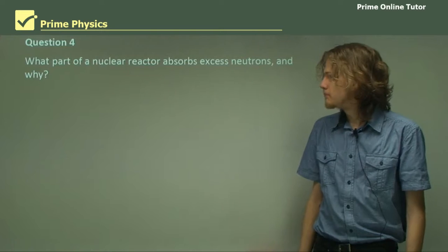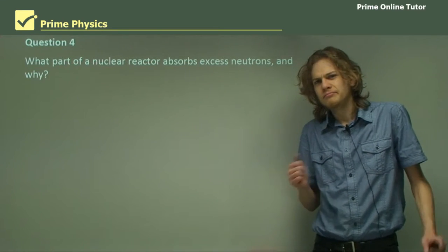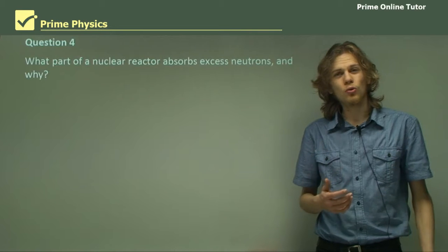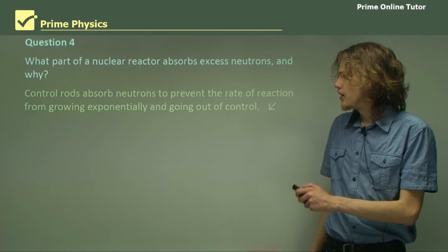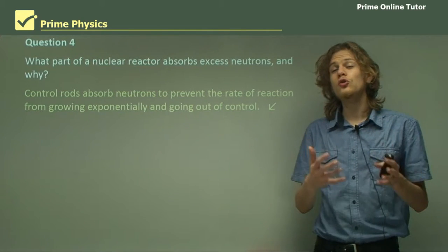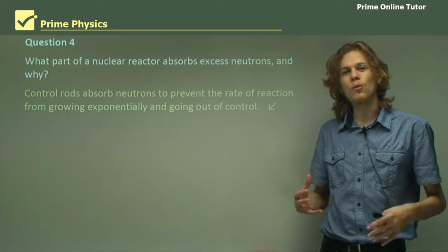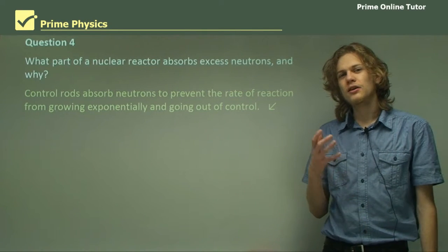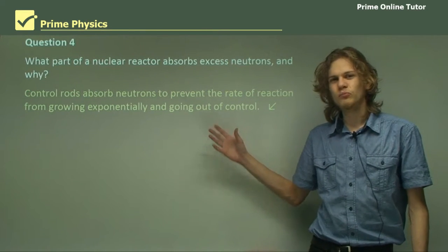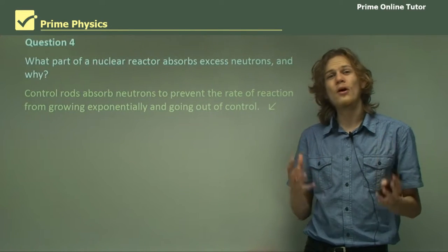Question four: What part of a nuclear reactor absorbs excess neutrons, and why? The answer is control rods. The reason they do this is because if they don't absorb a whole bunch of neutrons, we'll get an uncontrolled nuclear reaction that will grow exponentially. We need to limit the number of neutrons in the system, because otherwise the reaction will go out of control and we'll have more energy than we can handle.